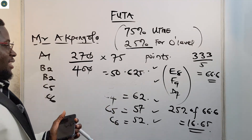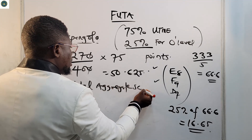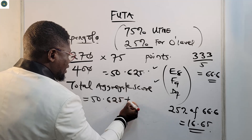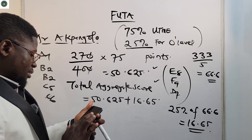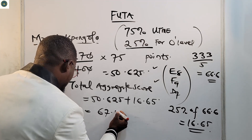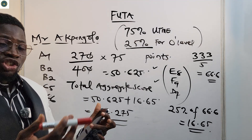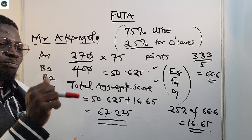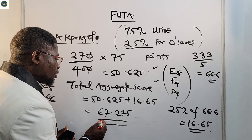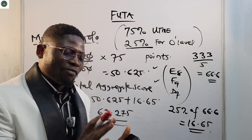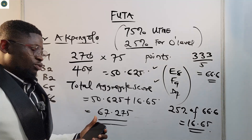To find the total aggregate score as a FUTA candidate, we add both parts: 50.625 (UTME portion) plus 16.65 (O-level portion) equals 67.275. This is the total aggregate score for that student. After getting your aggregate, check your department's cut-off mark for the particular course you chose. If your aggregate is above or equal to the departmental cut-off mark, you are safe. If it is below, you will not be admitted.